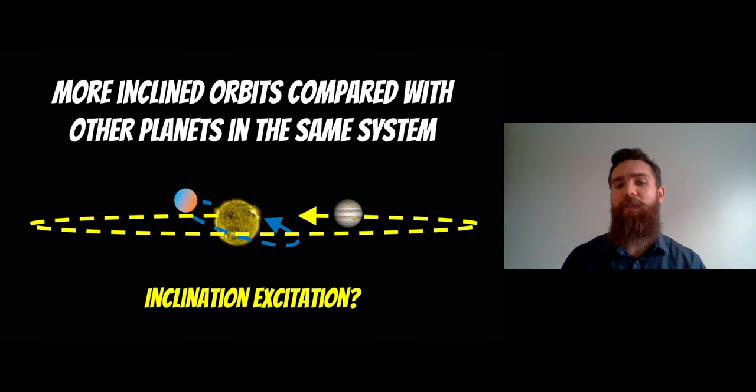And another interesting feature is that these ultra short period exoplanets are typically more inclined than the other planets in their system. So if we were to discover multiple planets around the same star, the ultra short period exoplanet would be inclined more than the other planets. And it's not fully understood why that might be the case.